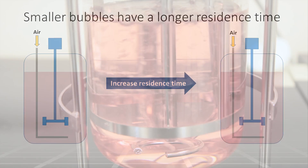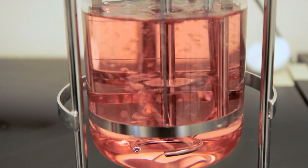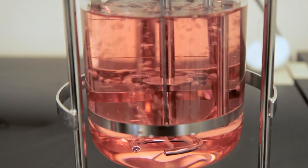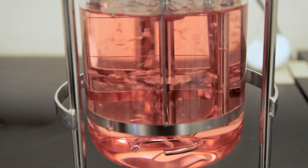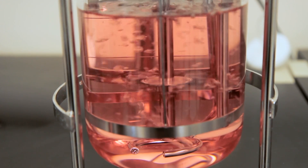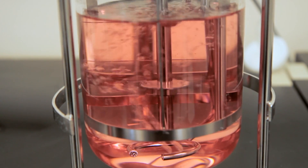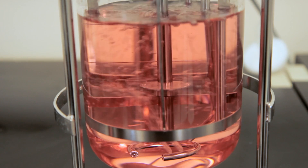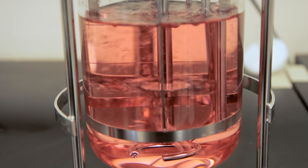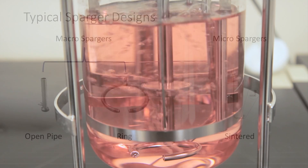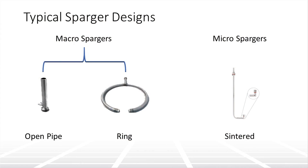The design and location of the sparger relative to the impeller location are critical design considerations for adequate distribution of bubbles in the bioreactor. Typical sparger designs can be grouped into two major categories: macro and micro.